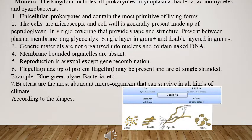Let us start with the kingdom Monera. The kingdom Monera includes all prokaryotes, unicellular, and primitive living organisms. These are microscopic in nature and the cell wall is present, made up of peptidoglycan. The cell wall is very rigid, providing shape and structure to the bacteria. These cell walls are present between the plasma membrane and a layer made up of glycocalyx. It is single-layered in gram positive bacteria whereas it is double-layered in gram negative bacteria.